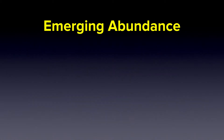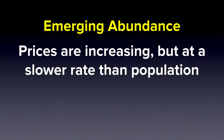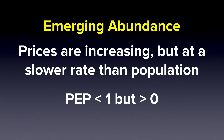Emerging abundance is a condition where prices are increasing, but at a slower rate than population. In this situation, the PEP will be less than one but greater than zero.